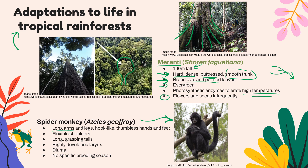One of the animals that might live among those Maranti trees is the spider monkey. It has super long arms and legs for swinging through trees. Its hands are hook-like and thumbless, allowing it to grip trees effectively. Its feet can grasp branches, as can its prehensile tail. Its shoulders are super flexible, allowing easy swinging. It has a highly developed larynx and can make many sounds to communicate within its population. It's diurnal, taking advantage of daylight to find food, and has no specific breeding season since the rainforest offers consistently pleasant temperatures and abundant food year-round.